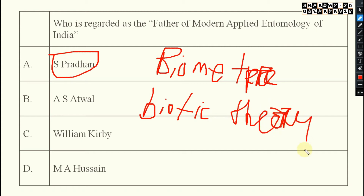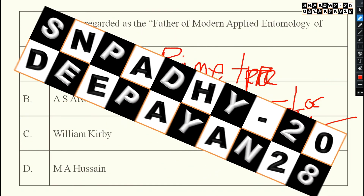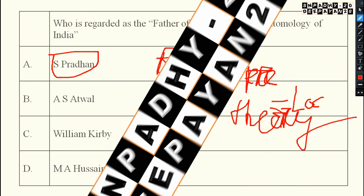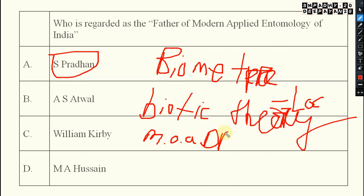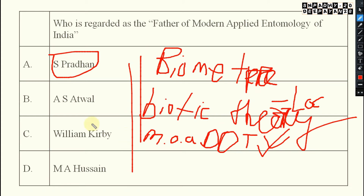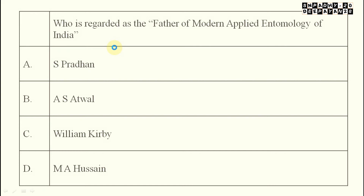The biotic theory he proposed was in relation to locusts and their life cycle. He also discovered the mode of action of DDT — dichlorodiphenyltrichloroethane — which was an effective pesticide at that time. He also made contributions towards IPM. These are the contributions for which Dr. S. Pradhan is known as the father of modern applied entomology of India.